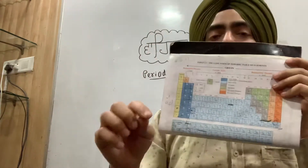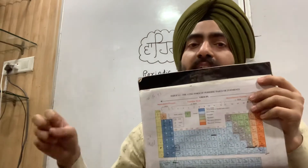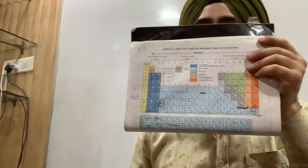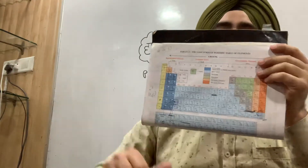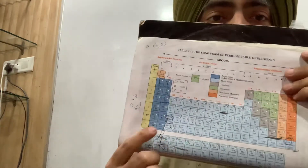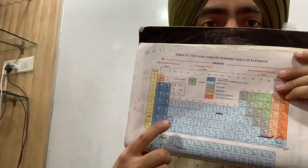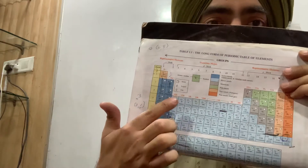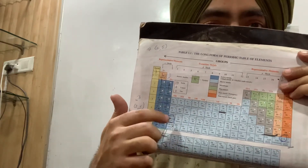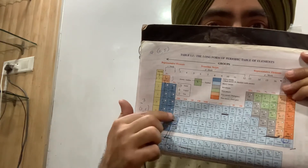Henry Moseley left spaces because he expected that more elements would be discovered. The lanthanides — also called rare earth metals — are placed in group 3, period 6. This is the 6th period position for the lanthanides.